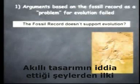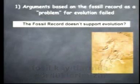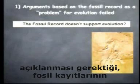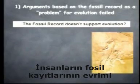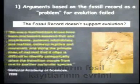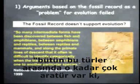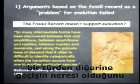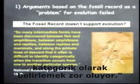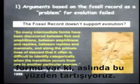One of the first things that intelligent design argues is that it is necessary to explain what we see in the fossil record — that the fossil record is a problem for evolution. You might hear people say that the fossil record doesn't support evolution. Well, the National Academy of Sciences only a few years ago basically said there are so many intermediate forms between all these species that it's often difficult to identify categorically where the transition occurs from one species to another. In other words, there are so many transitional forms, we actually argue about this.